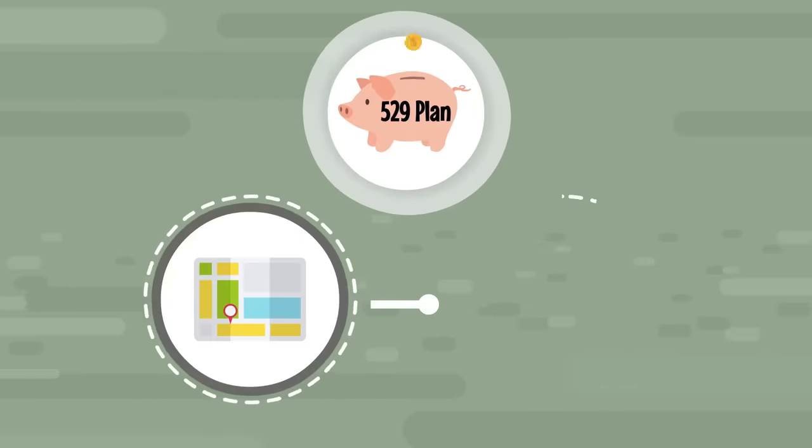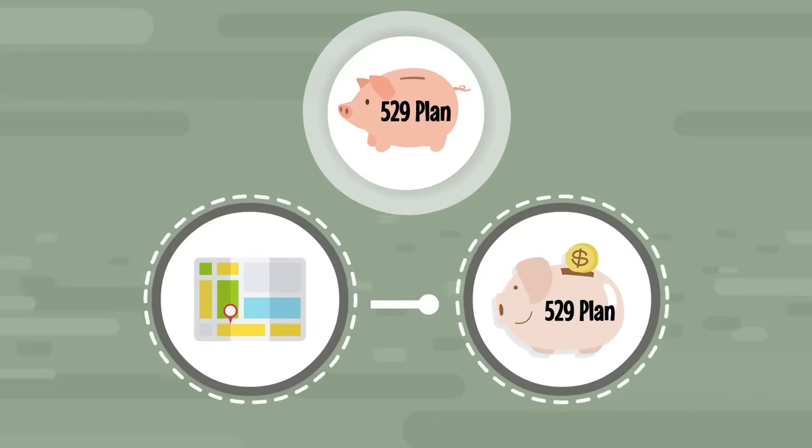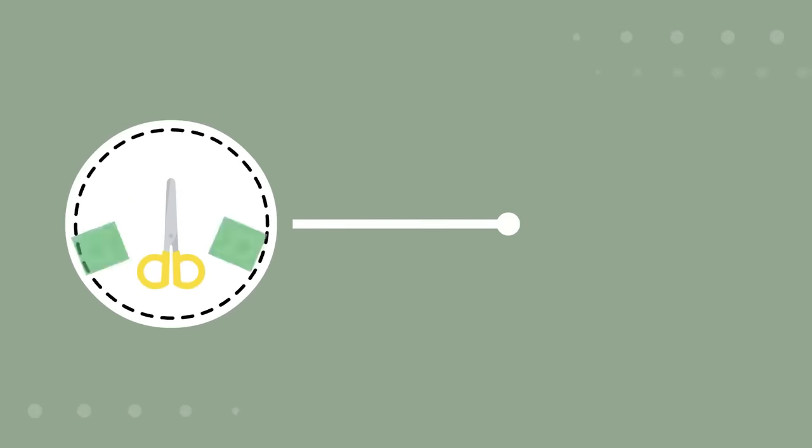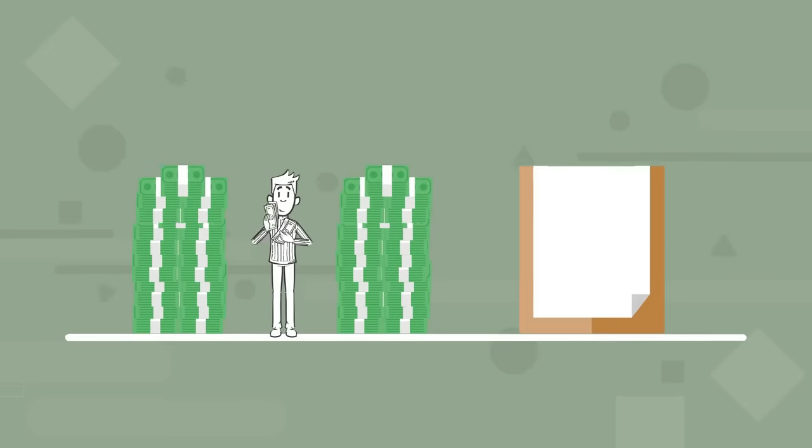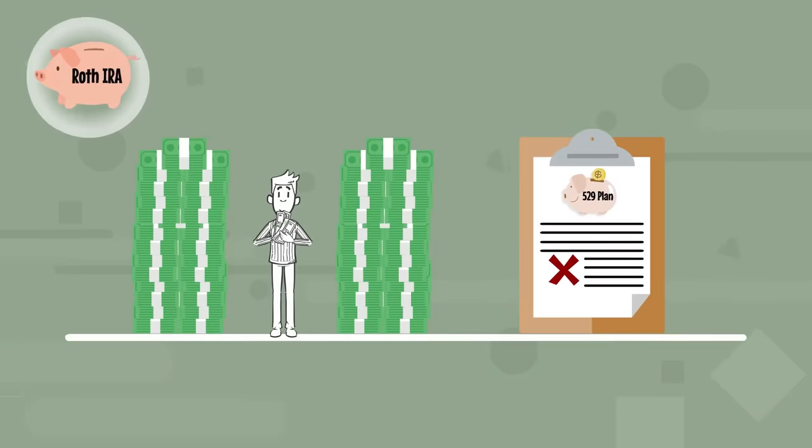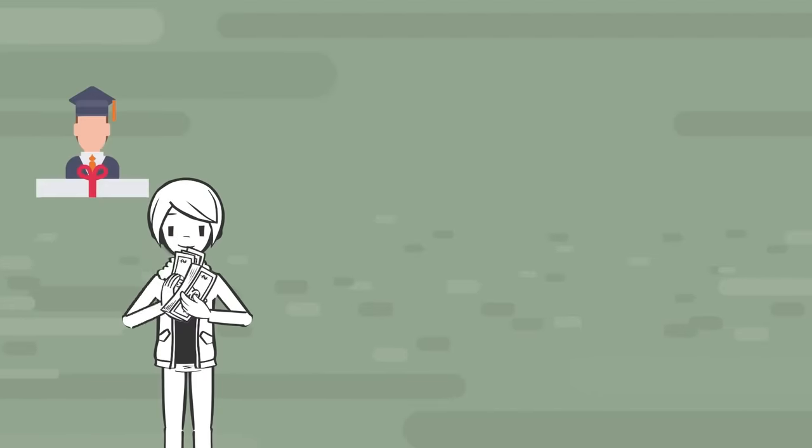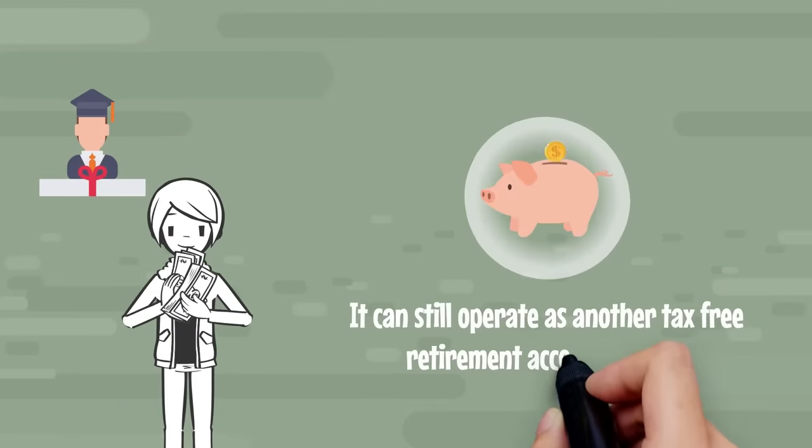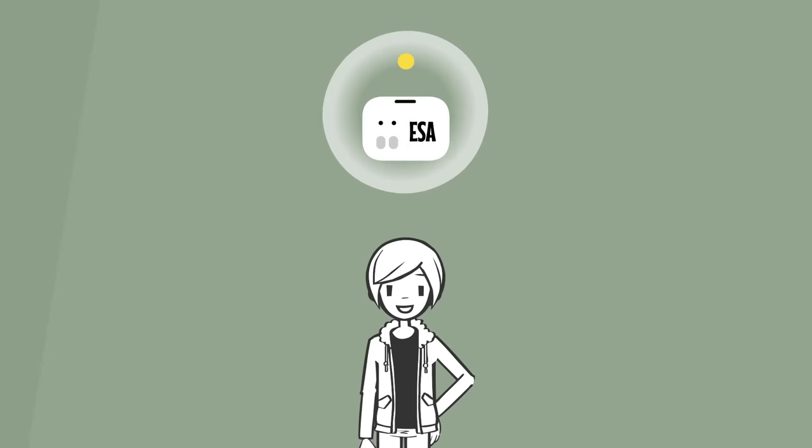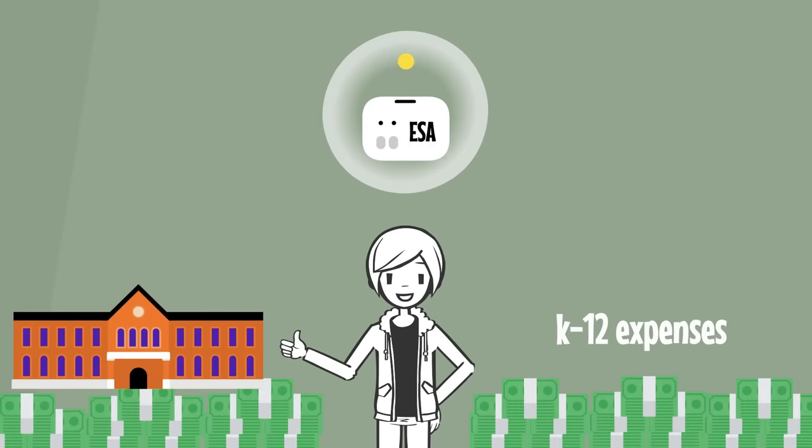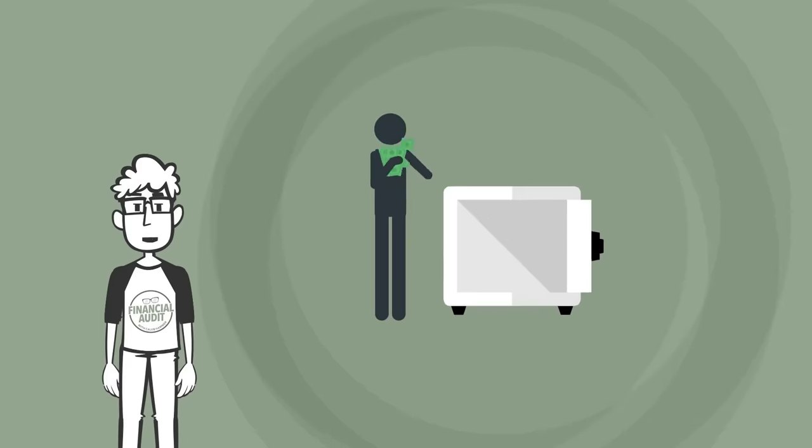529 plans are state-sponsored, so depending on the state that services your 529, you could be entitled to tax deductions and credits for your contributions. You can now roll over the funds you didn't use in a 529 plan over to a Roth IRA with no tax implications. This means that if you don't end up using it for education for some reason, it can still operate as another tax-free retirement account for you. The Coverdell education savings account, or ESA for short, allows you to save for college expenses as well as those K-12 expenses, although there is a contribution limit to this account type that phases out depending on your income.